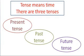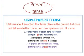Ek baar mein repeat karte hain: present matlab abhi jo chal raha hai, past matlab jo ho gaya, future jo aane wala hai. Chaliye ab hum sabse pehle present tense dekhte hain. Present tense is again divided into three tenses, and we will read all of them one by one. The first is simple present tense.